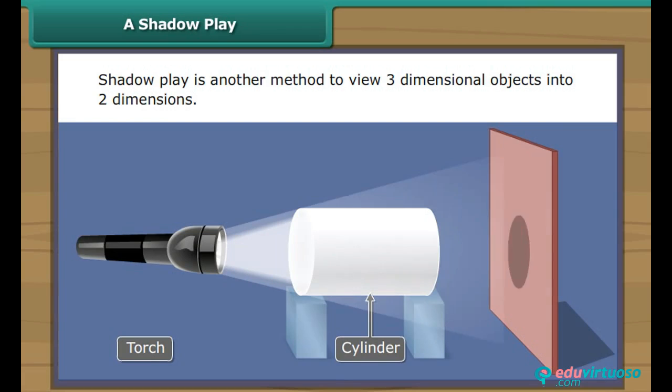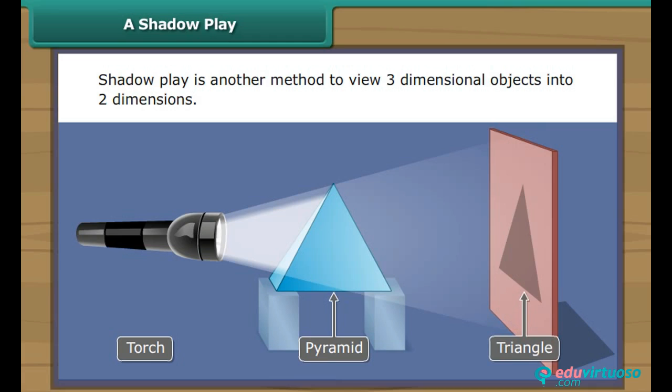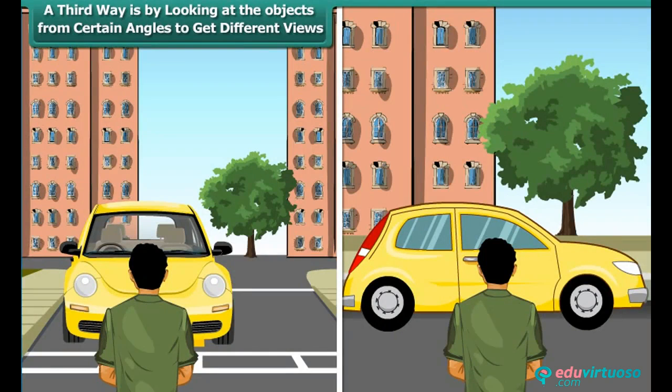Now we cast a shadow of cylinder. Now we cast a shadow of pyramid. There can be multiple answers because of different arrangements. A third way is by looking at the objects from certain angles to get different views.